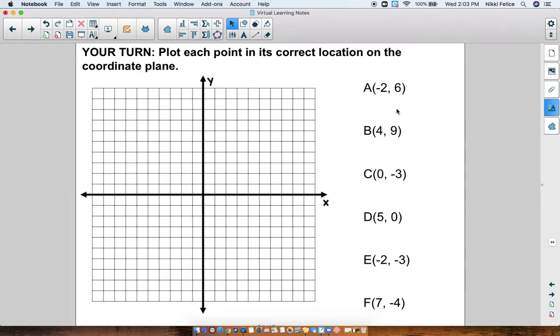Okay, point A, negative 2, 6. That would be negative 2, up 6. Here is point A. And this is in quadrant 2. I didn't ask you to tell me that. I just wanted to point out that this is quadrant 2.